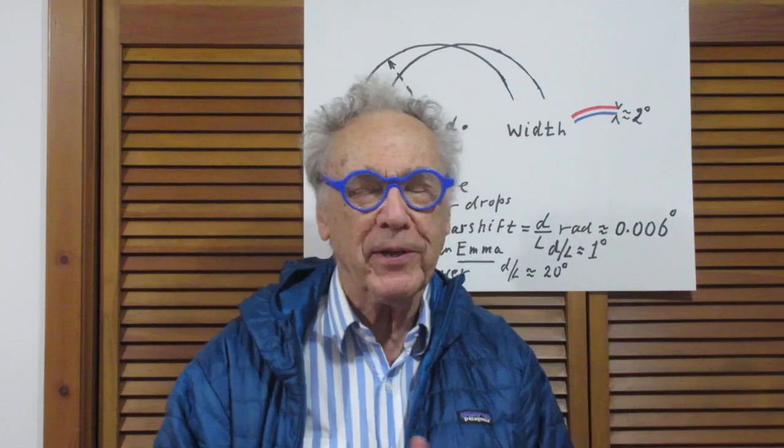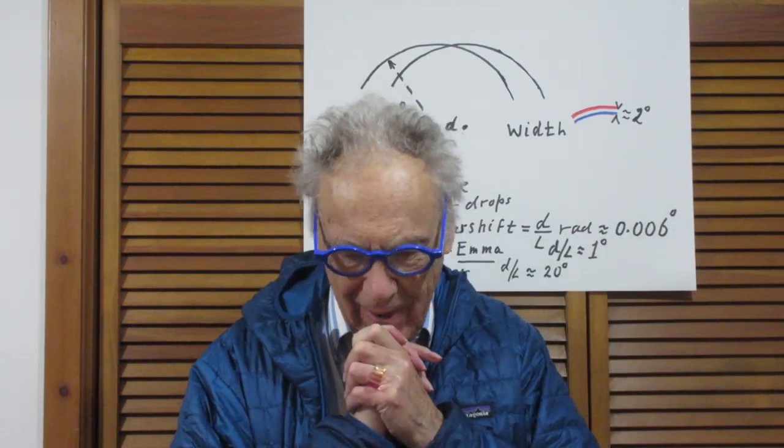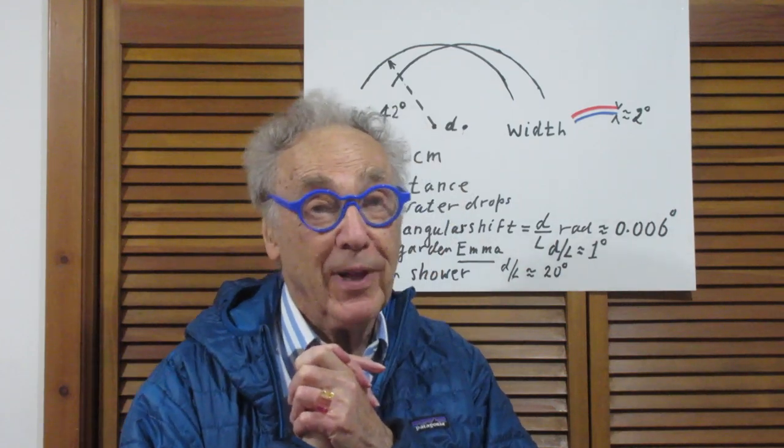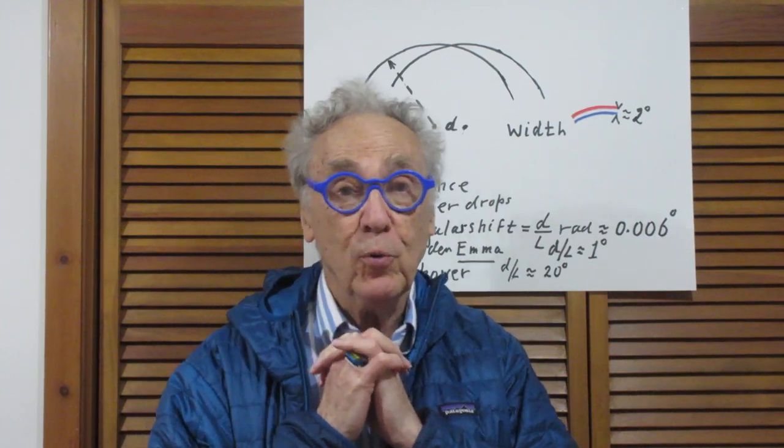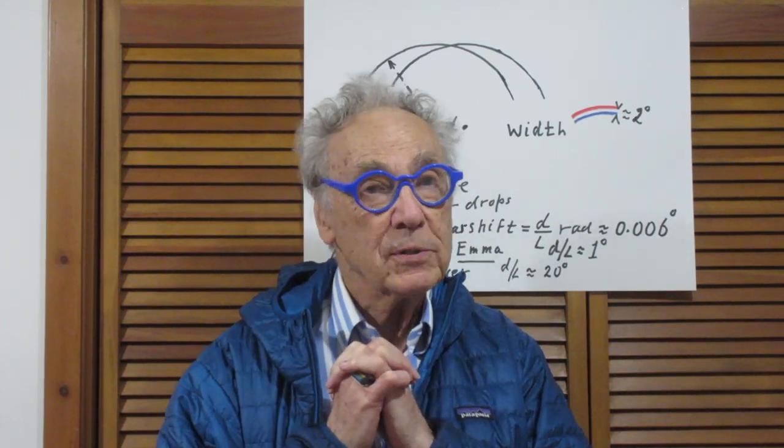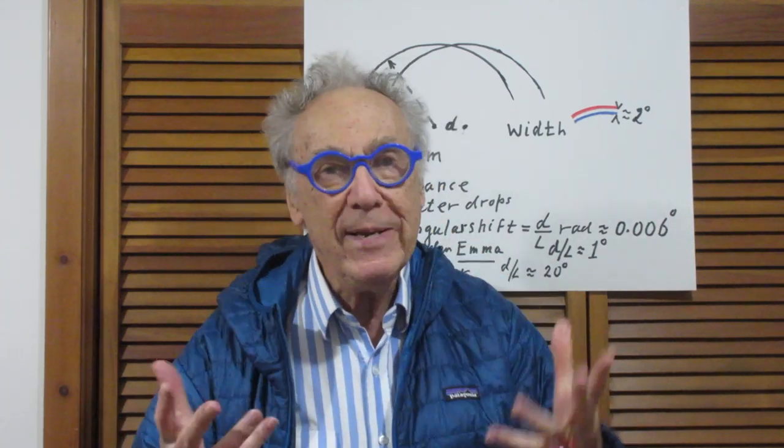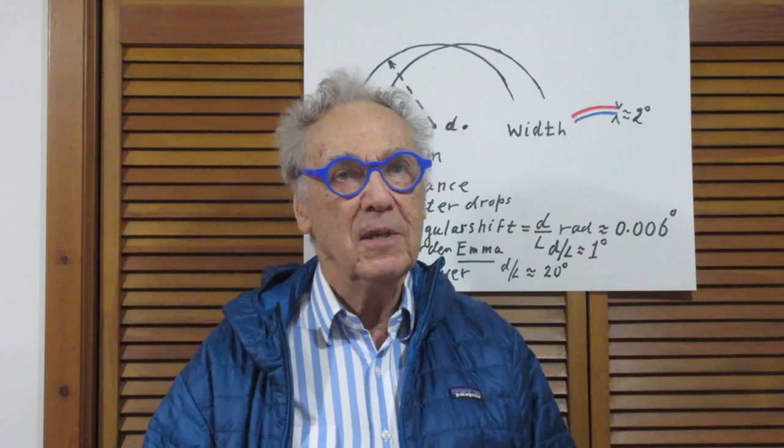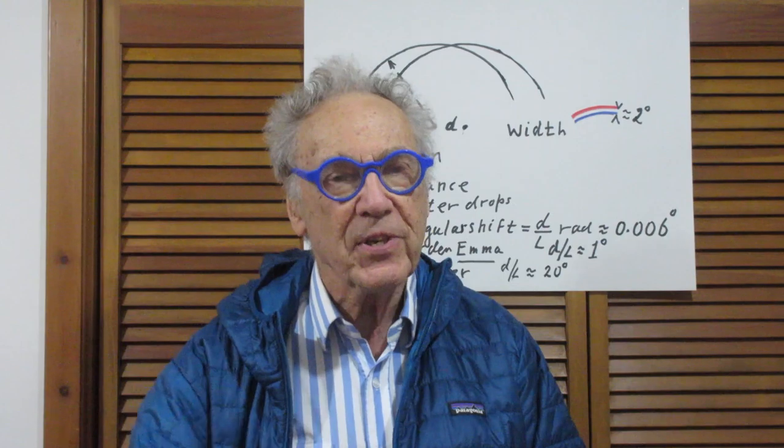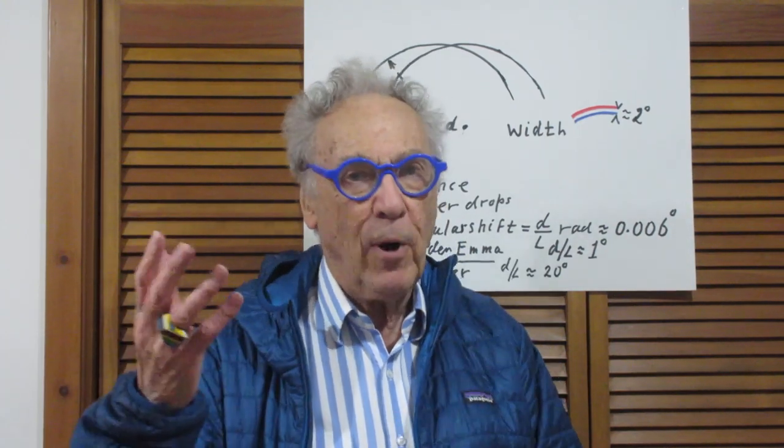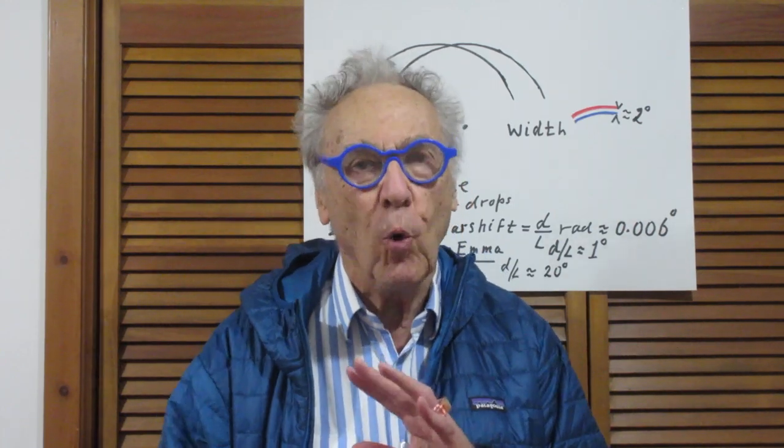I have already recorded the solutions to the rainbow problem. I forgot to mention, that's why I do that now, that I have assumed that all of you will have watched at least one of my rainbow lectures, so that you have a complete understanding why the red is on the outside, why the blue is on the inside, why the radius of the bow is about 42 degrees, and why the center of the bow is the anti-solar point.